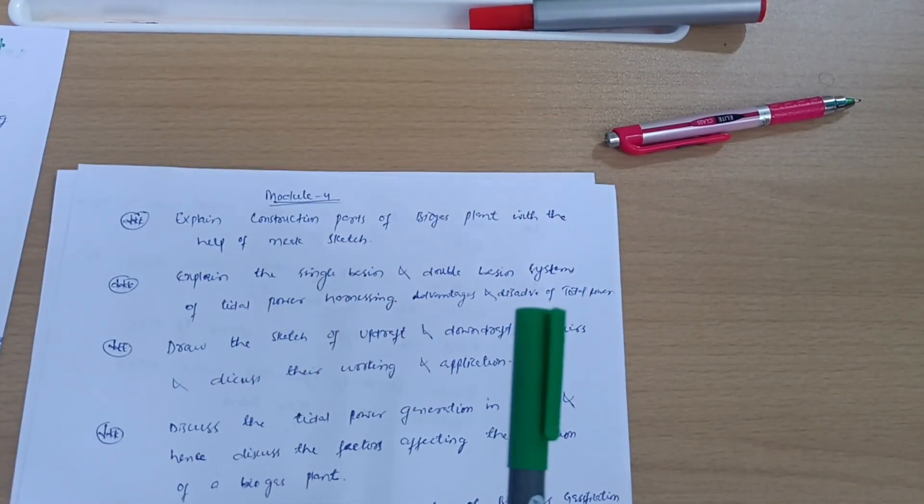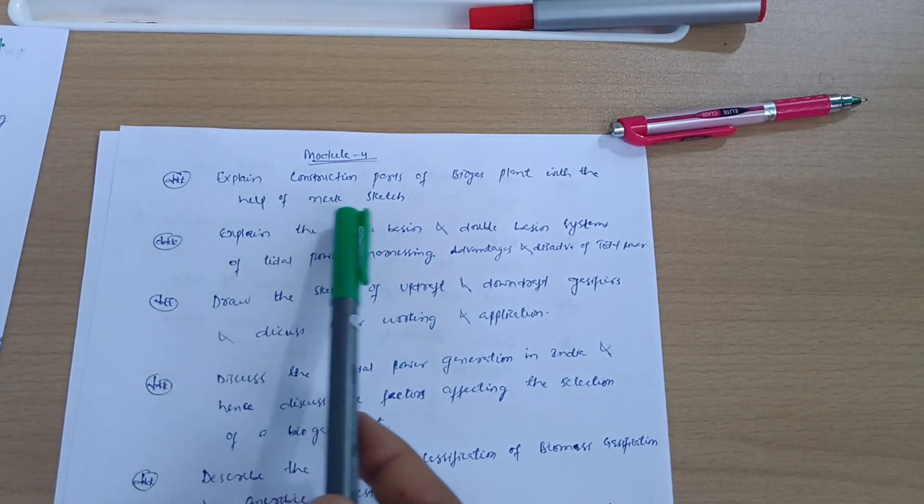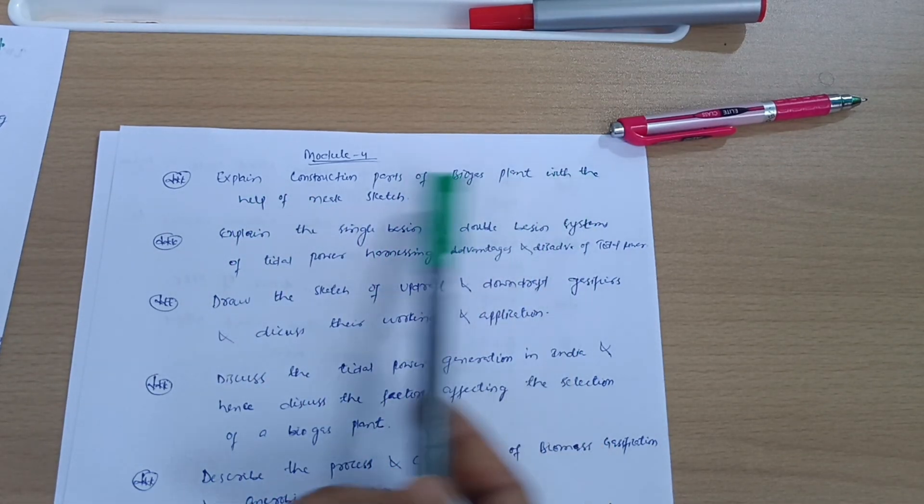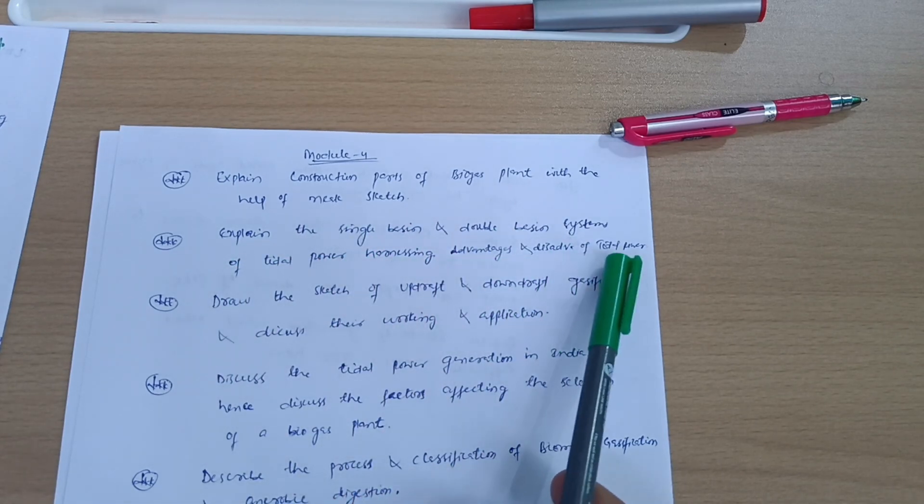Now Module 4, we have again seven questions: Explain construction parts of biogas plant with the help of neat sketch. Explain the single basin and double basin systems of tidal power harnessing advantages and disadvantages of tidal power.